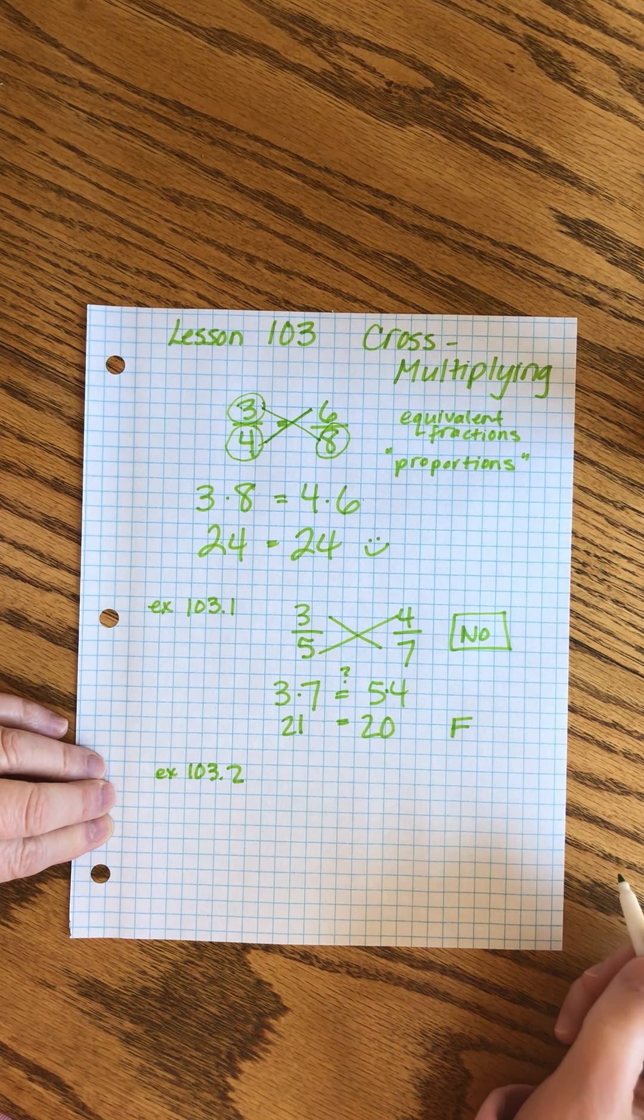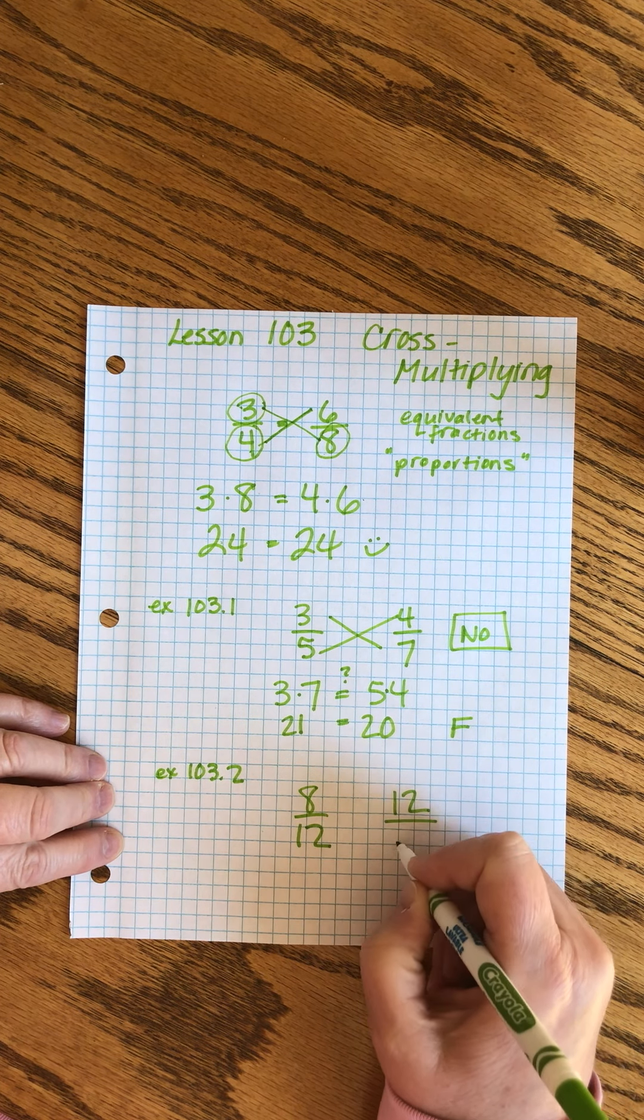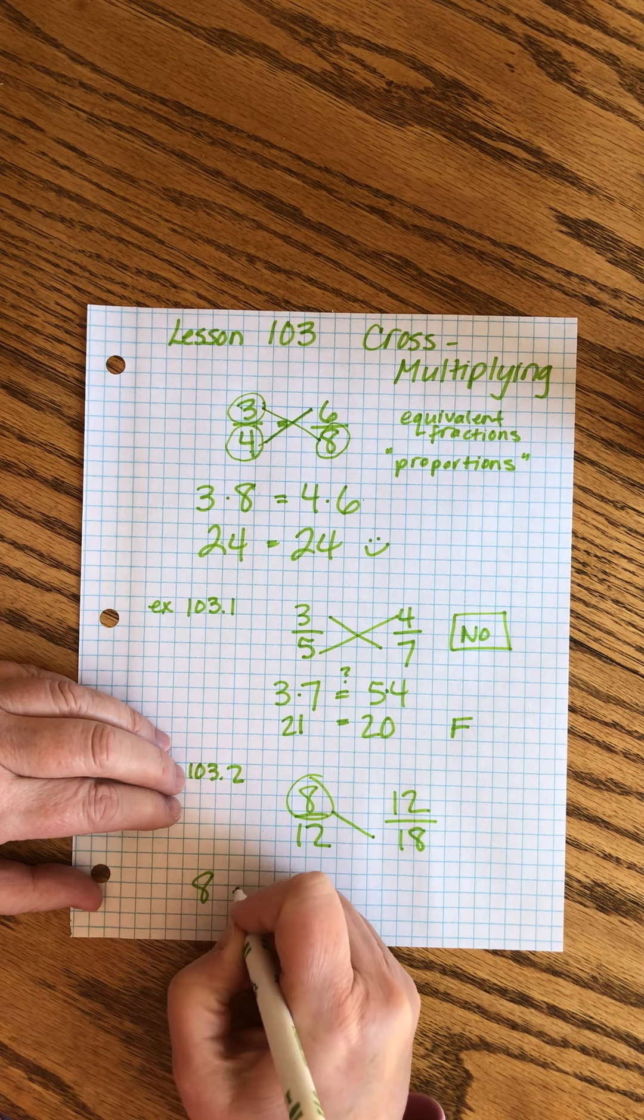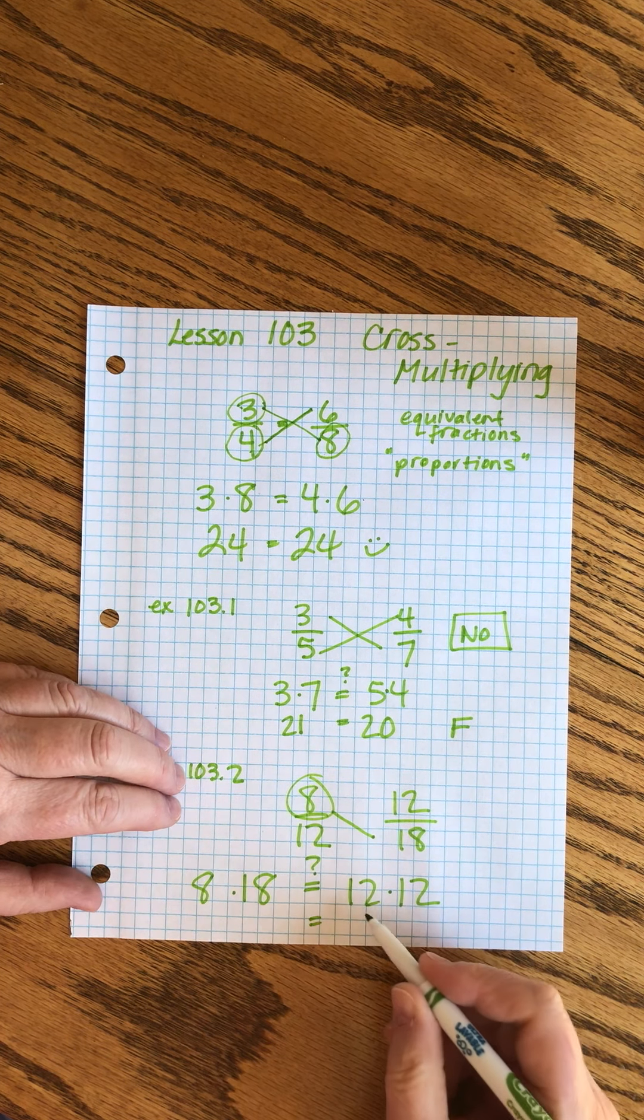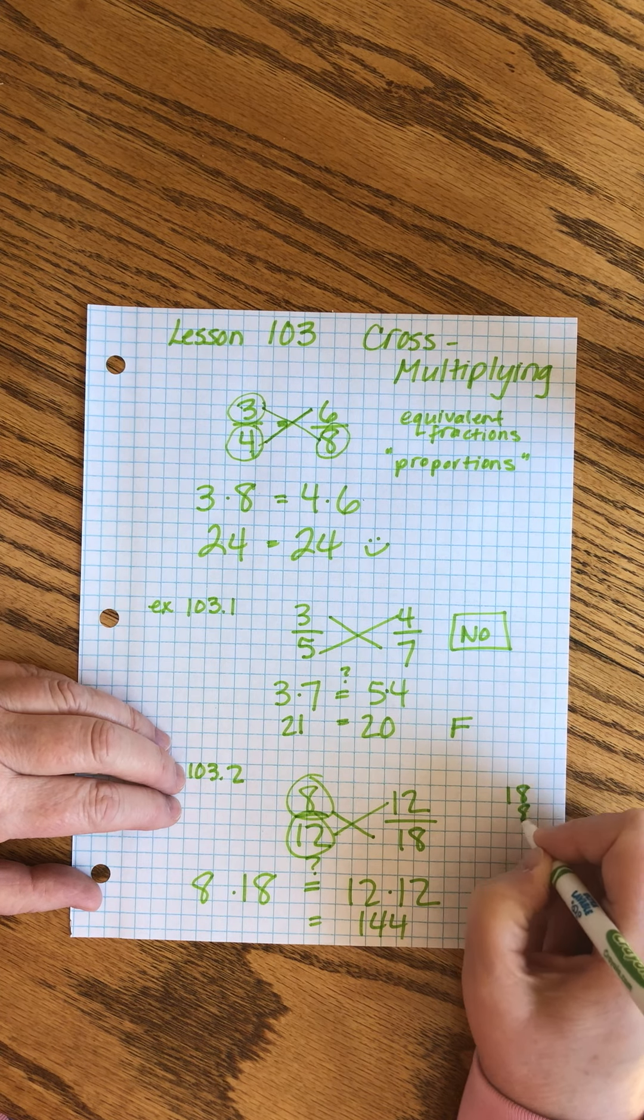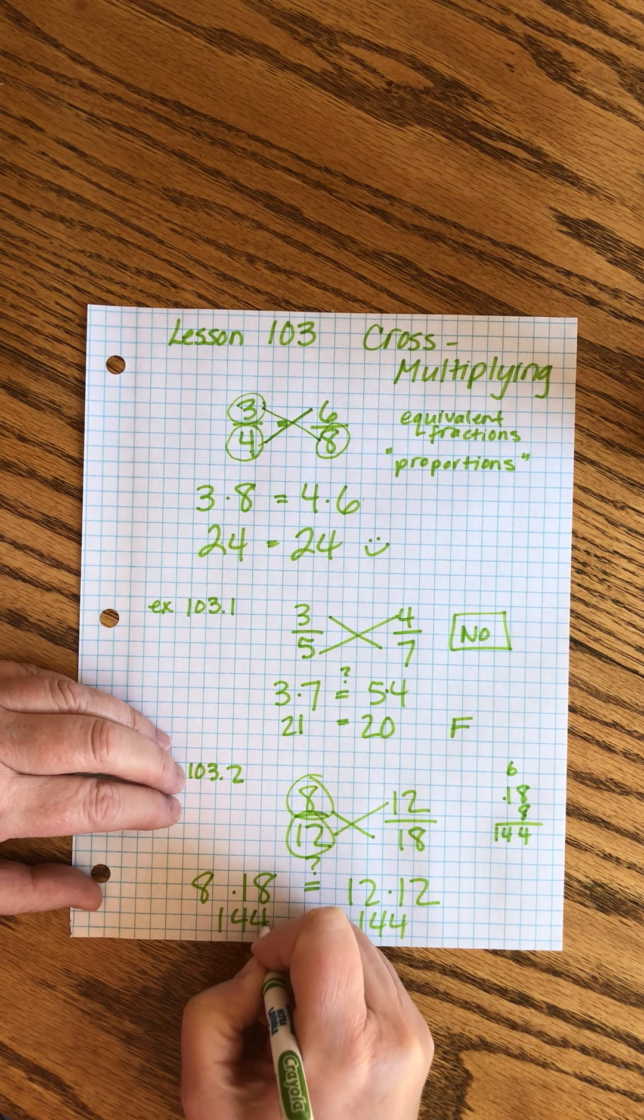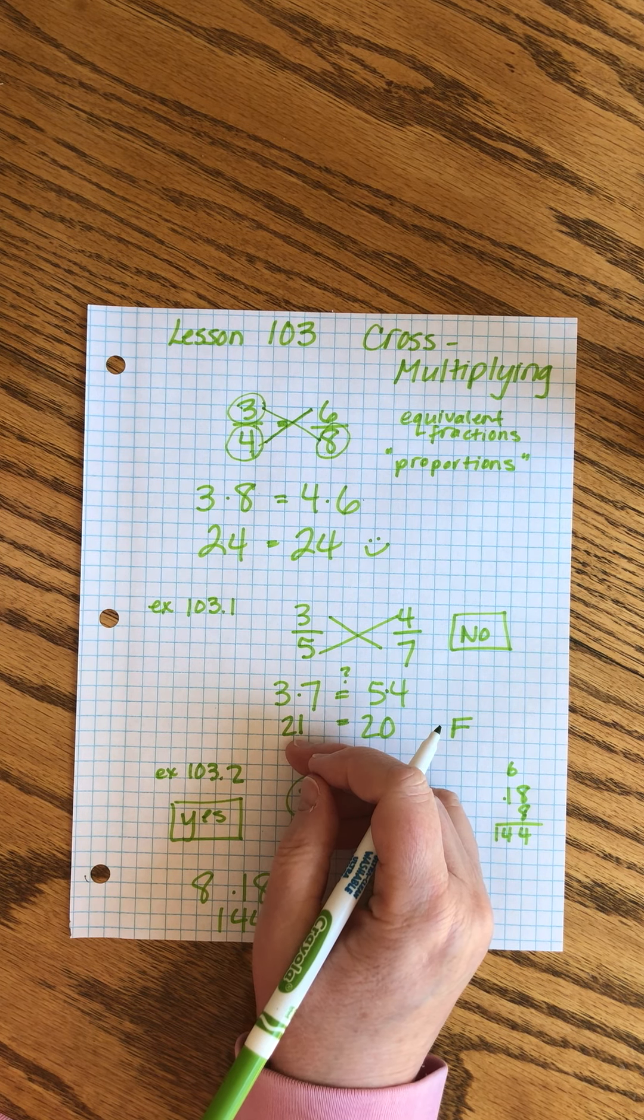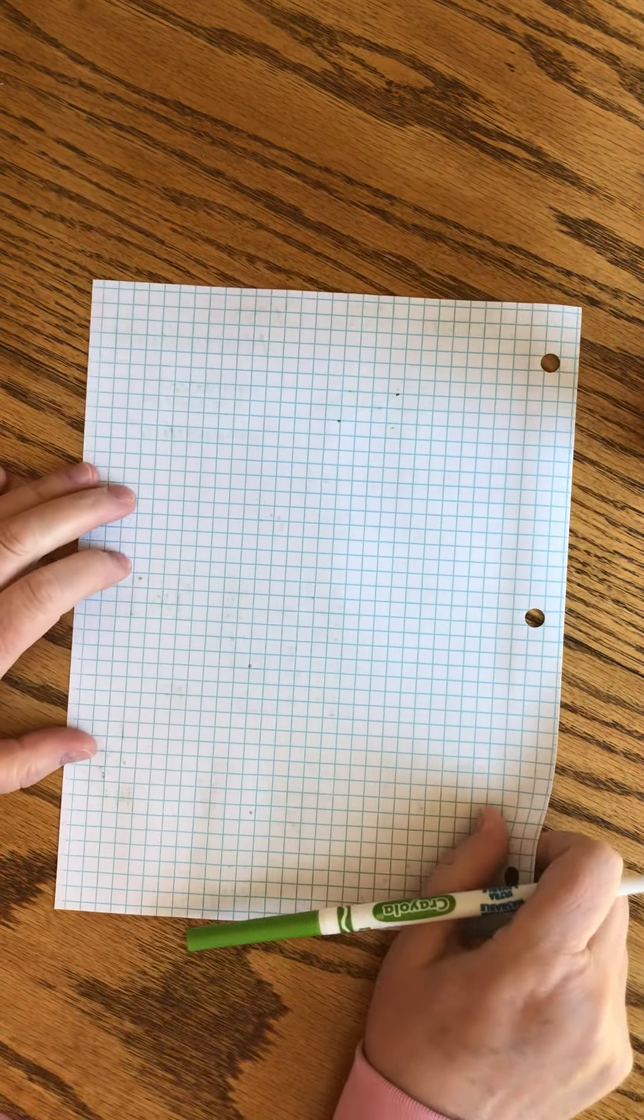103.2: Do these two ratios form a proportion? 8/12 and 12/18. Our test is to cross multiply and see if it works. We start with the 8 and multiply it down to the 18. And then we're seeing, is that equal to 12 times 12? 12 times 12 is 144. 18 times 8, that is going to be 64, plus 6 is 144. Look at that! So the answer is yes, these two do form a proportion. Beautiful. So we can use cross multiplying as a test with two fractions to see if they are proportional, or in other words, equivalent fractions.